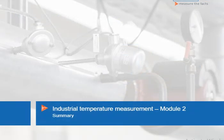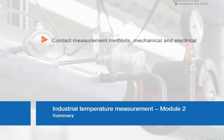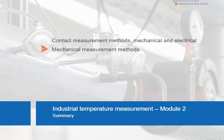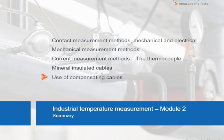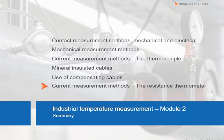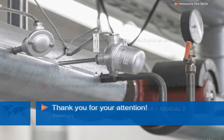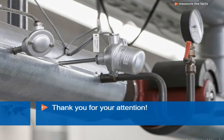Now, let us briefly summarize what we've learned in this second module on industrial temperature measurement. We know now that contact measurement technology is divided into mechanical and electrical methods. We've seen temperature measurement methods and know the build-up and the working principles of the thermocouple. We've been acquainted with mineral insulated cables and the use of compensating cables. We also have learned how a resistance thermometer works. Congratulations! You now know the main principles of industrial temperature measurement.